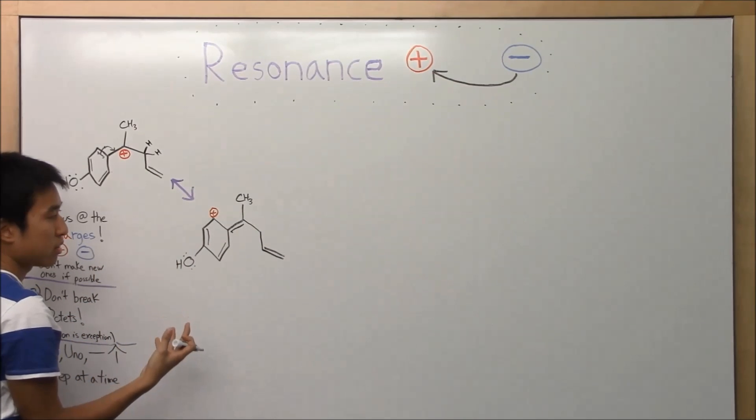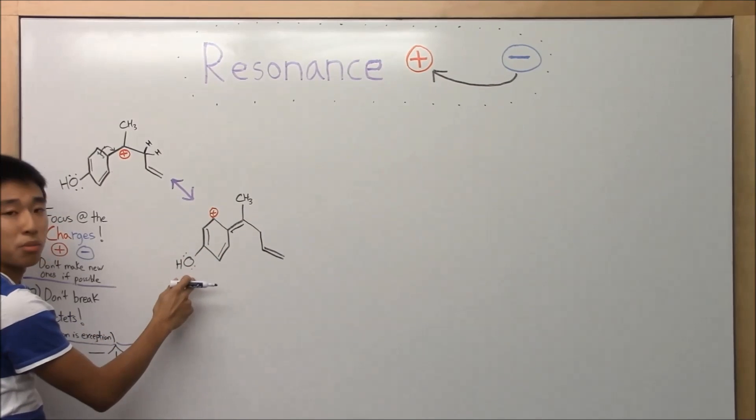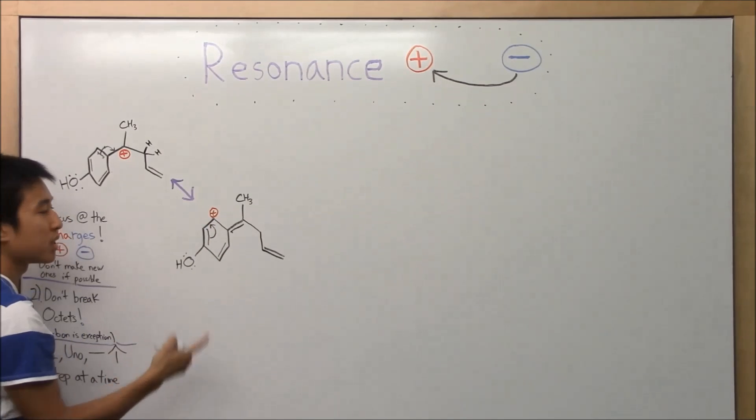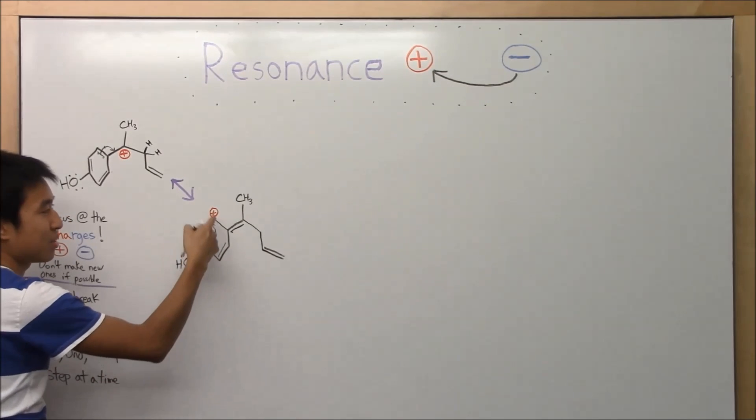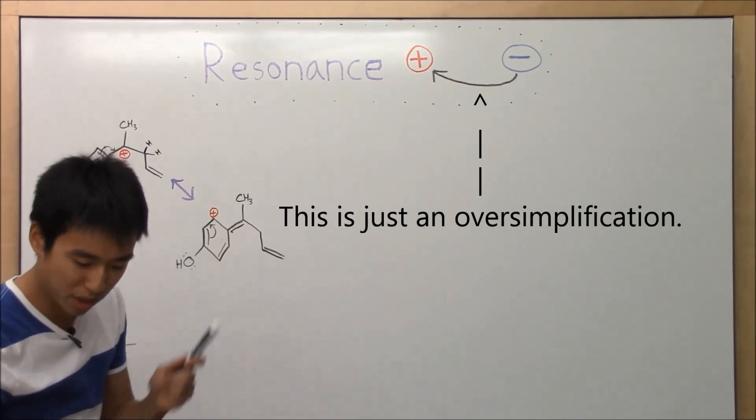So the nearest source of electrons is this pi bond, because this one is kind of far away, and this lone pair is kind of far too. So let's do this. Remember, do the bond not to the charge. And why not to the charge?